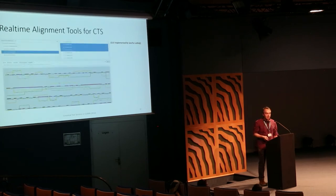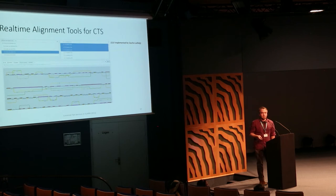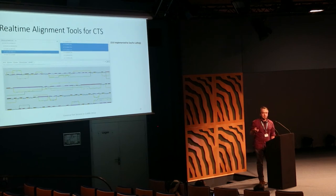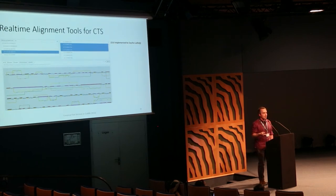The second tool uses the knowledge about the language tag that is part of the CTS URN to visualize language variations in one translation, one language.